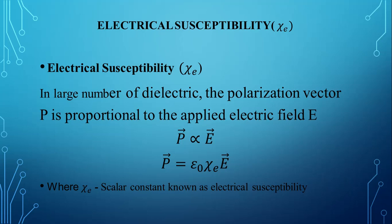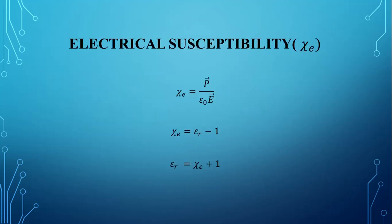Electrical susceptibility is denoted by the letter chi. In a large number of dielectrics, the polarization vector P is proportional to the applied electric field. The constant of proportionality chi_e is called electrical susceptibility; it is a scalar constant. We also have the relation: chi_e equals P vector divided by epsilon naught times E. Substituting the value of P, we get chi_e equal to epsilon_r minus 1. Epsilon_r is the dielectric constant. Also, epsilon_r equals chi_e plus 1. These are some relations related to susceptibility.